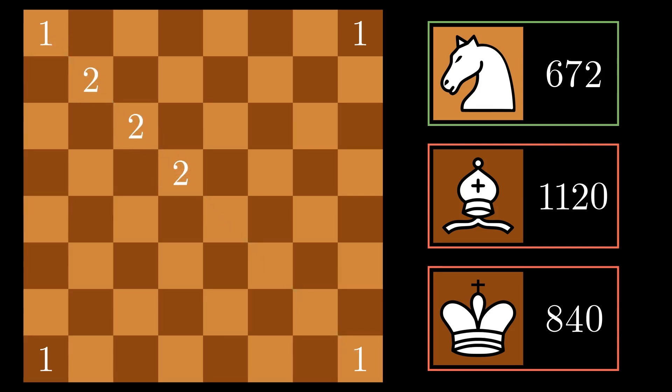After doing these three squares, I can use the symmetry of the board to fill out the rest. These impossible moves reduces the Bishop total further to 1,092.